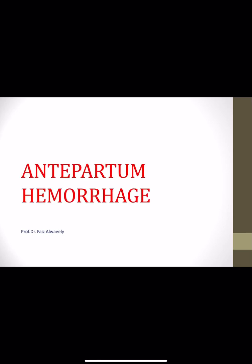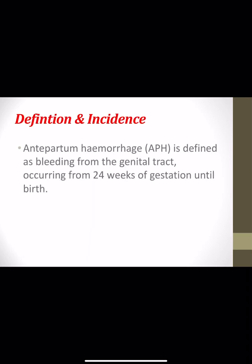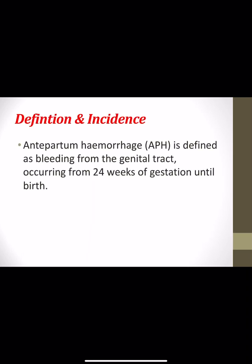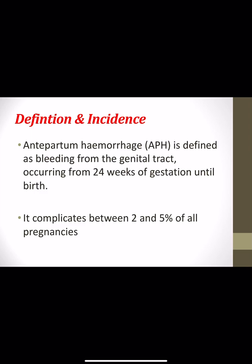Antepartum hemorrhage. By definition, antepartum hemorrhage is defined as bleeding from the genital tract occurring from 24 weeks of pregnancy until the birth of the child, and some definitions use 20 weeks of pregnancy. The incidence is between 2 to 5 percent of all pregnancies.